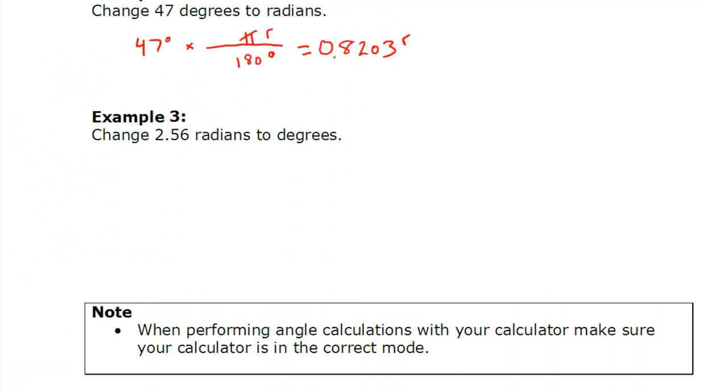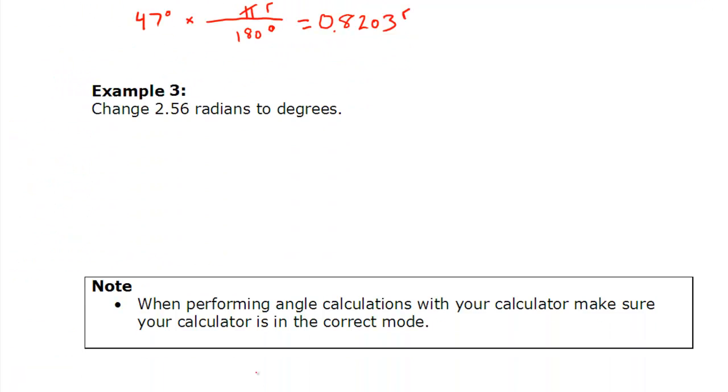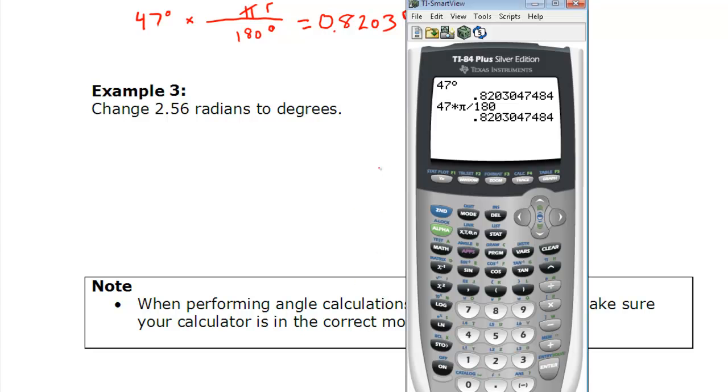We'll do one more, and then we have that note at the bottom here that says, when performing angle calculations with your calculator, make sure your calculator is in the correct mode. If you are inputting radians, you need radians. If you're inputting degrees, you need degrees. If you're doing the conversion and you want your answer in degrees, we need degrees for the mode. So we look at our calculator again, we have 2.56, these are radians this time.